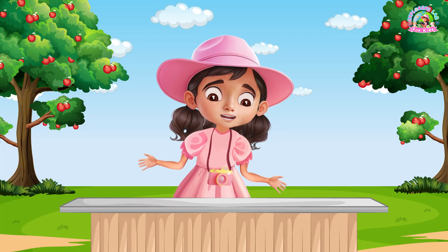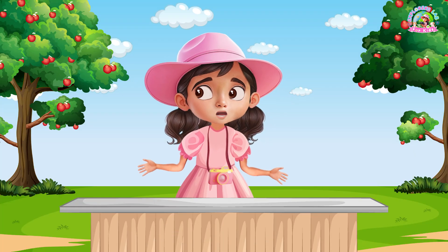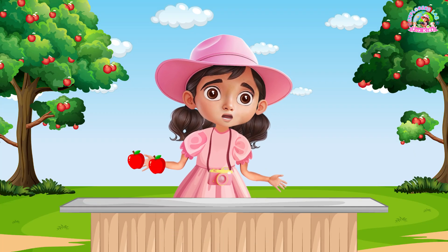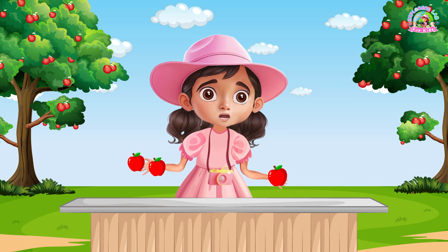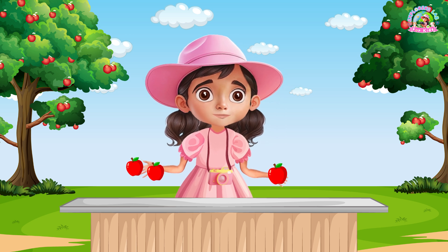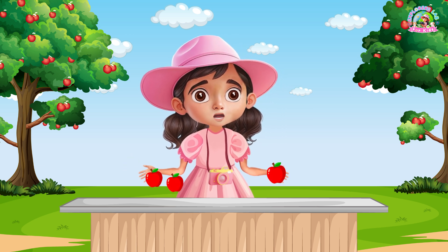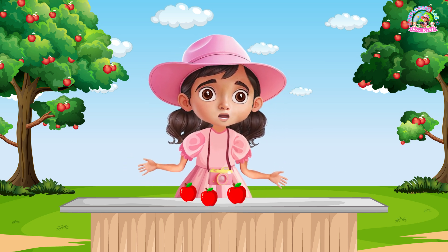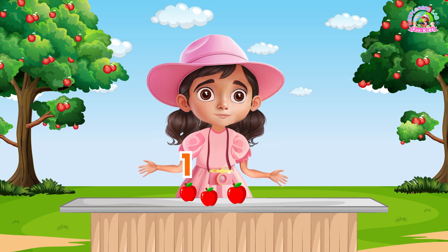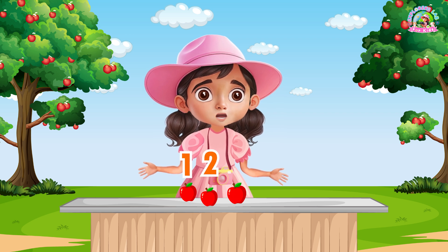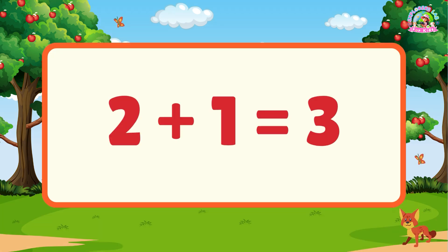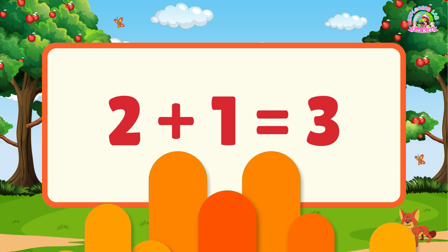For example, let's say I have two apples in one hand and one apple in the other. If we put them together, how many apples do we have? Let's count: one, two, and three. That means two plus one equals three.